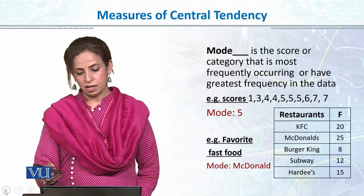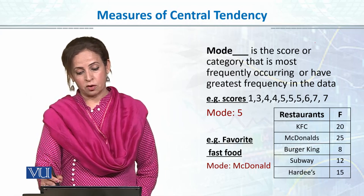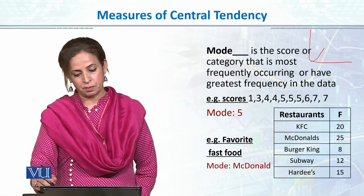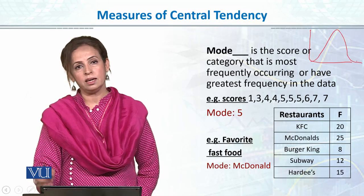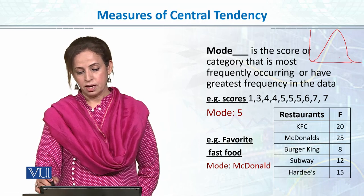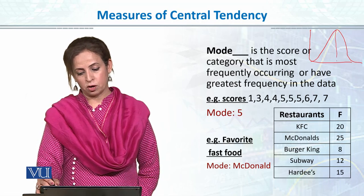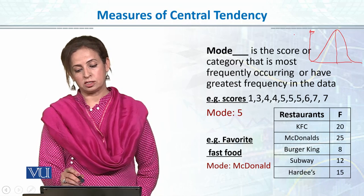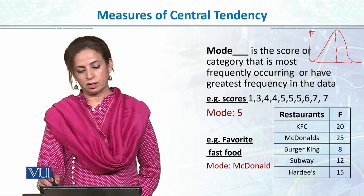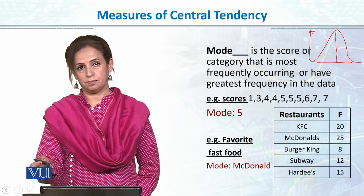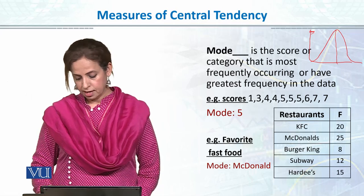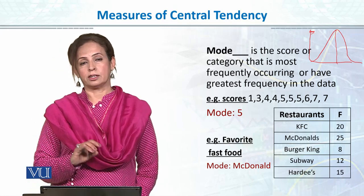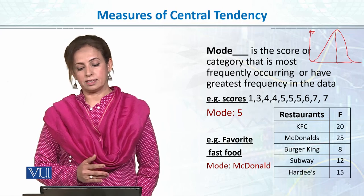Isi tarah grouped data ke andar bhi mode find out karna aasaan hai, aur even aap graphical distribution se bhi dekh sakte hain. Kyunke jahan pe bhi distribution ki peak ban rahi hogi, that will be the mode value — kyunke peak of the distribution corresponds to the frequency, which means the highest number of individuals is in that group. Lekin jaise hamne kaha, mode mostly categorical variable ke liye, ya nominal, ordinal data ke liye dekhte hain.